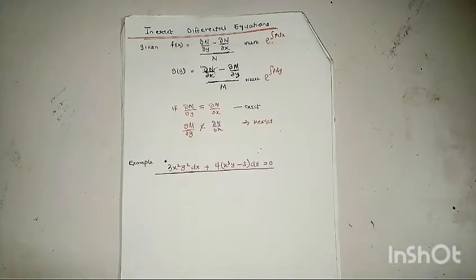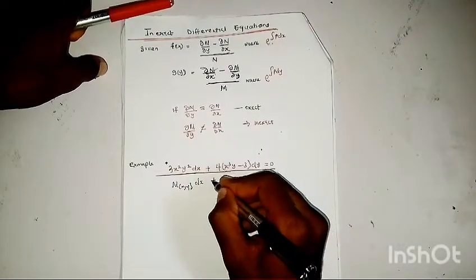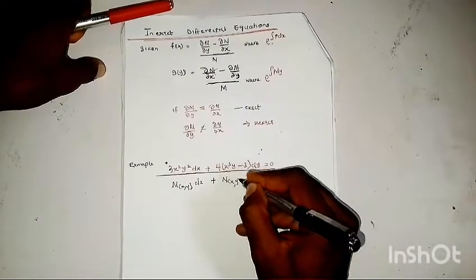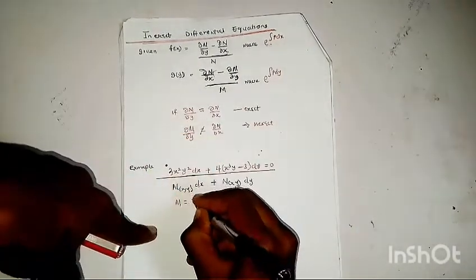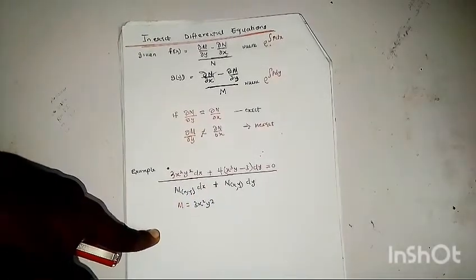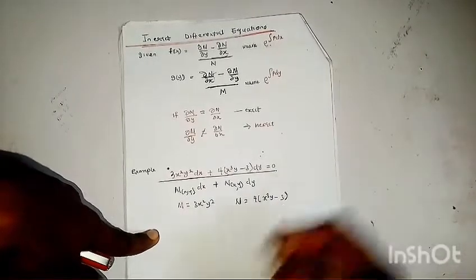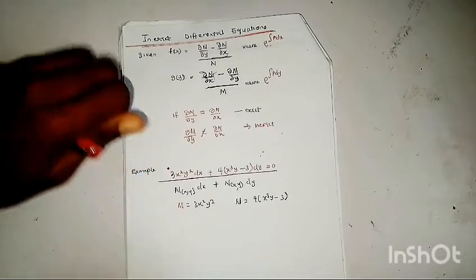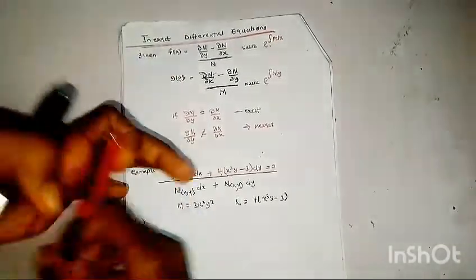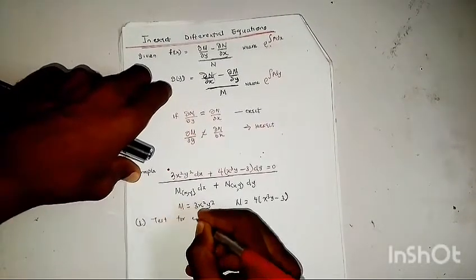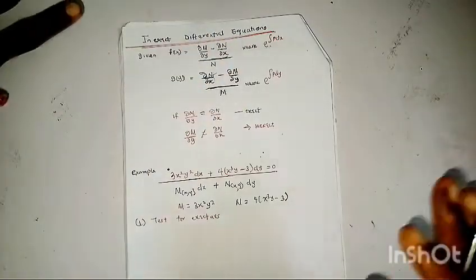The general form is M(x,y) dx + N(x,y) dy = 0. Given my M to be equal to 3x²y² and my N to be equal to 4(x³y − 3). Now the first thing — you will only know if it is exact or inexact once you test for exactness. So the first step we do is to test for exactness.